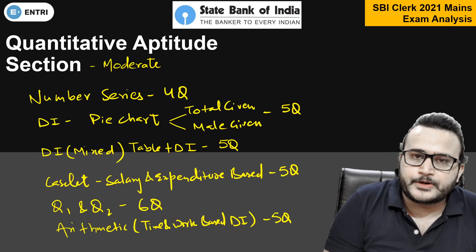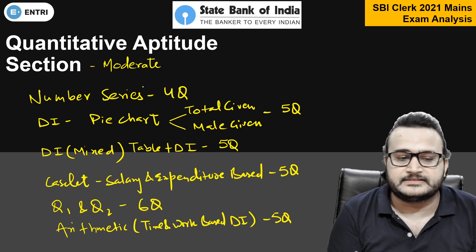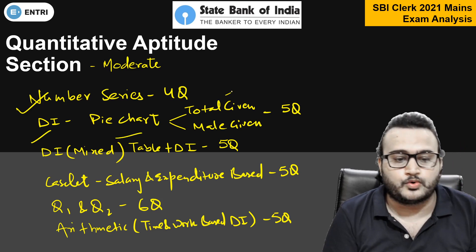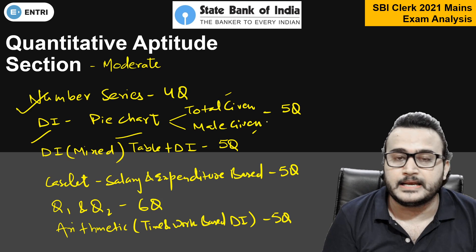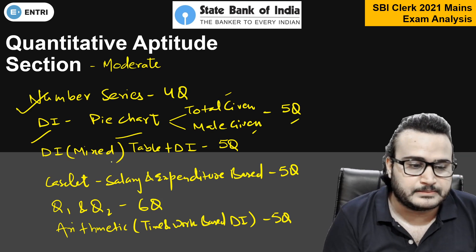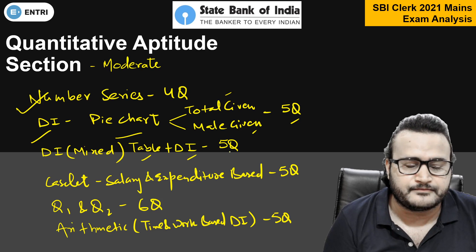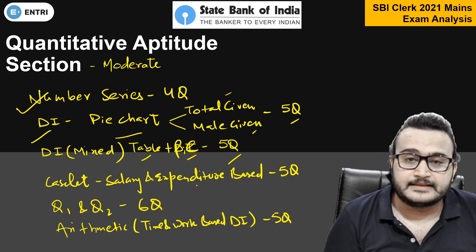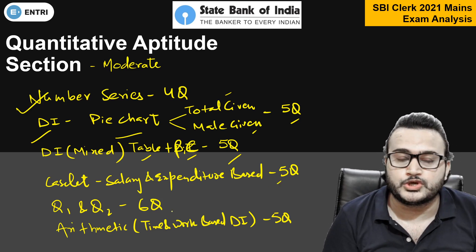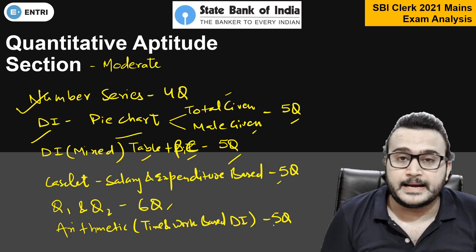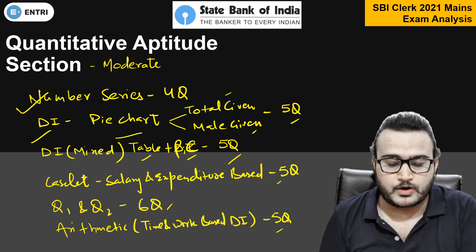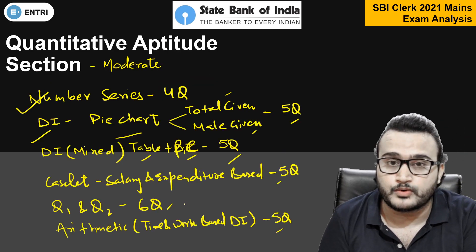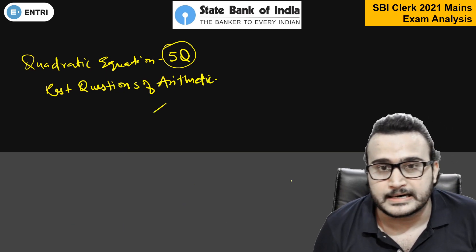This is the Quantitative Aptitude analysis. Overall, this section was moderate. Number series — we saw 4 questions. DI: pie chart based DI was given where total population and male population were given, 5 questions based on this. Mixed DI — table and pie chart were given, 5 questions. Caselet DI — salary and expenditure based, again 5 questions. Q1 and Q2 question based, 6 questions. Arithmetic based DI — time and work based DI, 5 questions. Quadratic equation — again 5 questions were there. And comparative inequality — Q1 and Q2 questions were also there. Rest of the questions were from arithmetic.